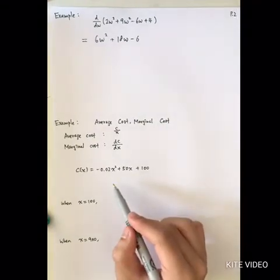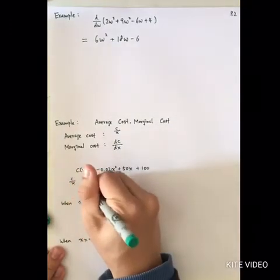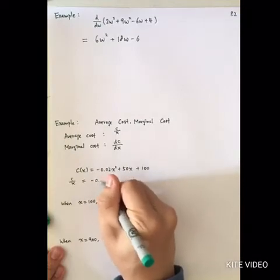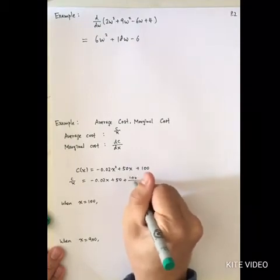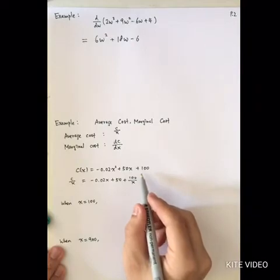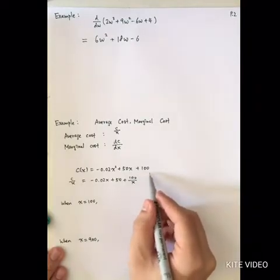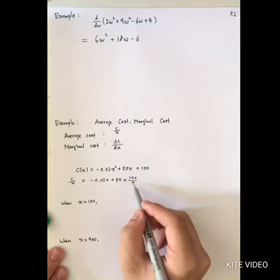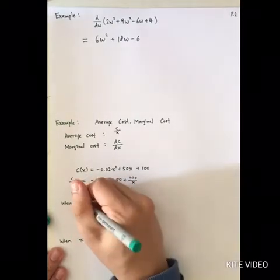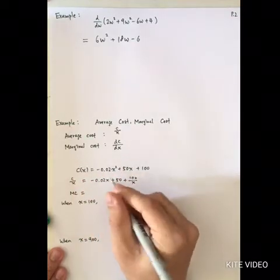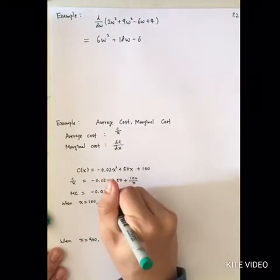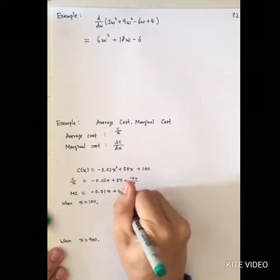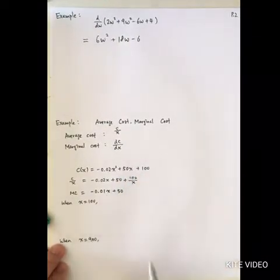So if you are given a total cost equation, to find the average cost, you just divide by x, and you will get negative 0.02x plus 50 plus 100 divided by x. Many students make the mistake of neglecting the 100 term — make sure you divide it by x as well. For the marginal cost, you differentiate the cost function with respect to x, giving negative 0.01x plus 50. This is your marginal cost function.